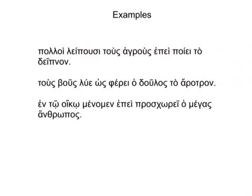Our third sentence means: we remain in the house when the large person approaches. Here again we have two clauses, signaled by our two verbs, menomen and proscore, and we have our clause marker, epe, meaning 'when,' which introduces our dependent clause.